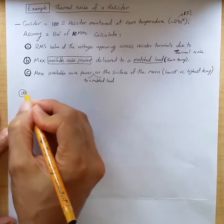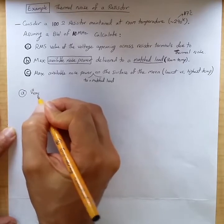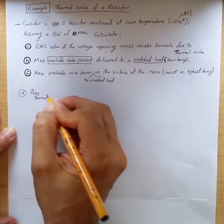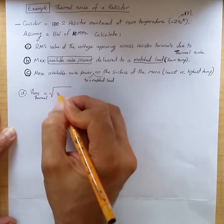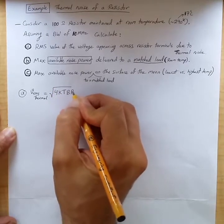For part A, we know that the RMS voltage because of thermal noise is equal to the square root of 4KTBR, where K is Boltzmann's constant, T is temperature, B is bandwidth, and R is resistance.